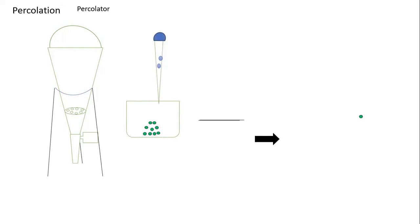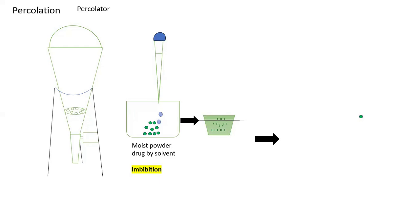To begin, take the drug material you want to extract and moisten it using a small quantity of the solvent that will be used for extraction — adding the solvent drop by drop. This process of moistening the drug powder with the solvent is known as imbibation. The moist drug material is then placed into the percolator.